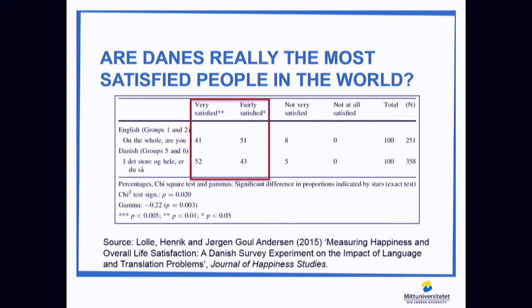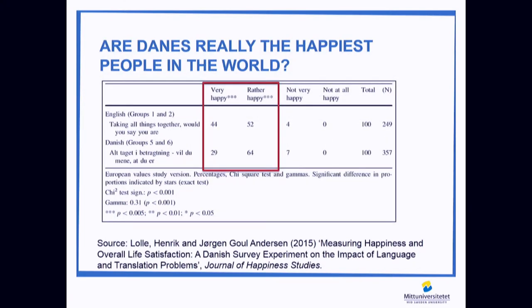Interestingly, they also found that when you ask about happiness, 'satisfaction' and 'satisfying' in Danish is translated as 'tillfreds.' If you speak with a Dane and ask them, they say tillfreds is like 'it's okay' — and if it's okay, you can live with a lot of stuff. When it comes to happiness, it's translated into 'lykkelig,' and here they find opposite results: 44% if you receive it in English are very happy.